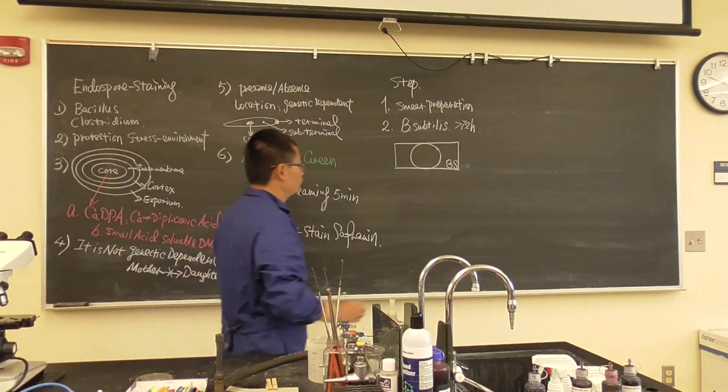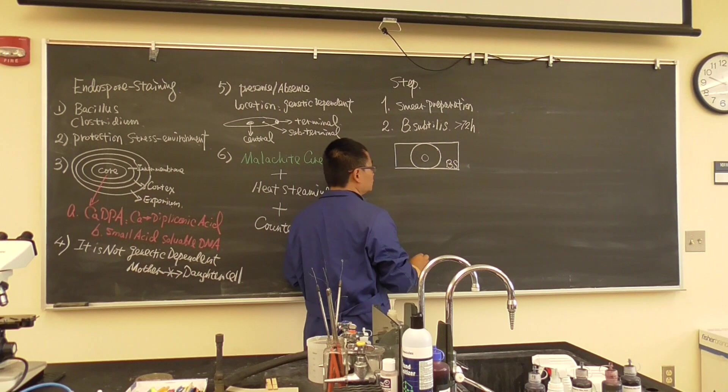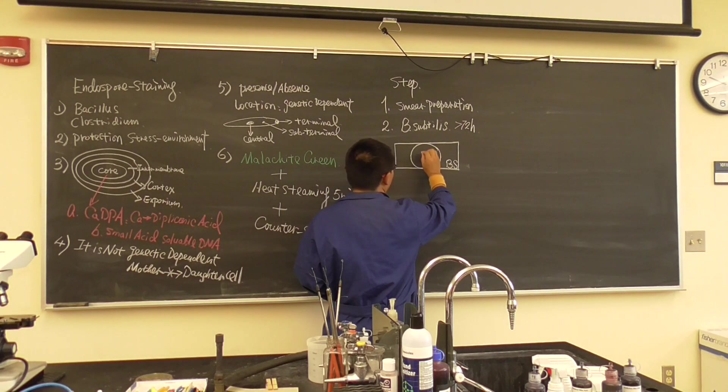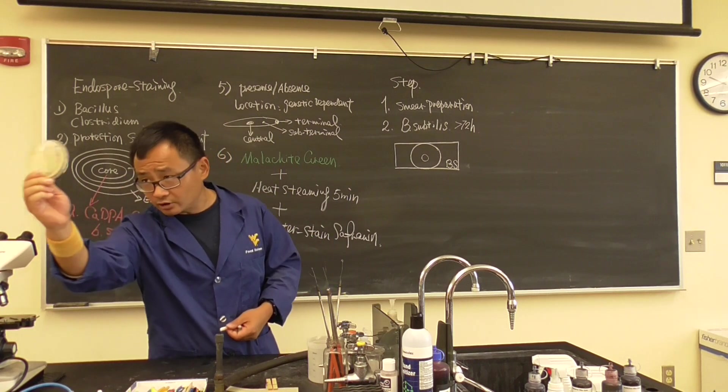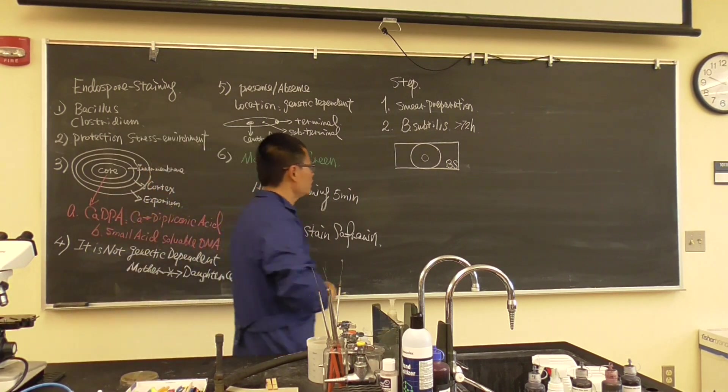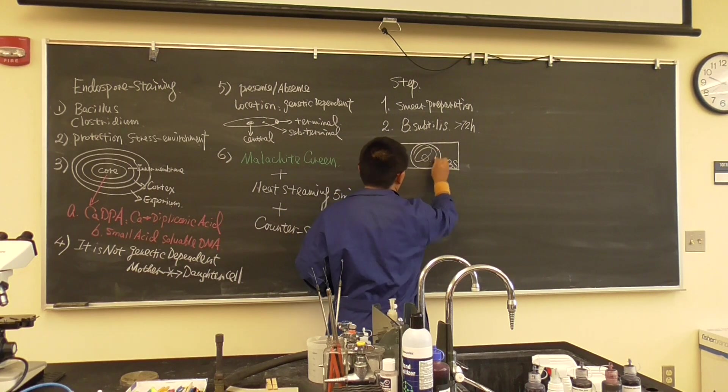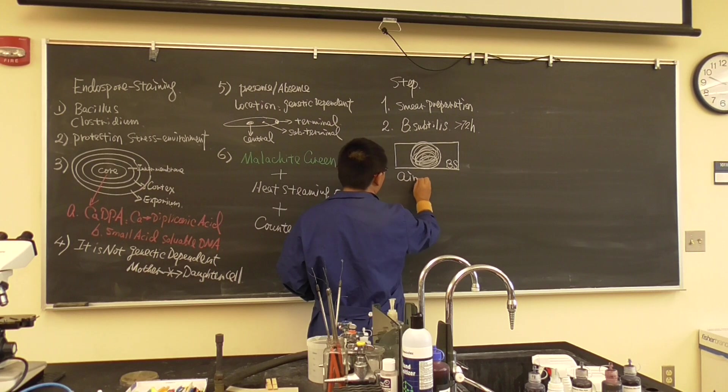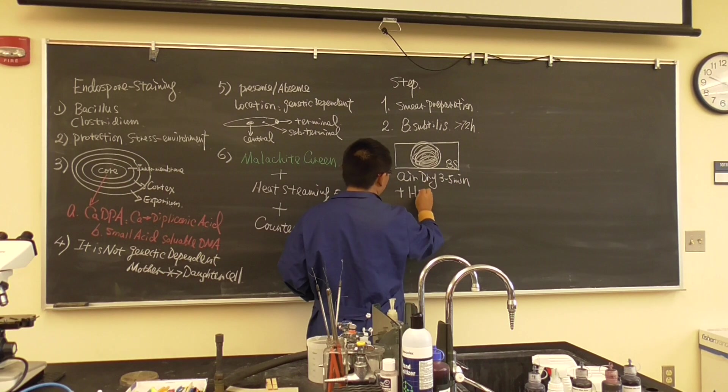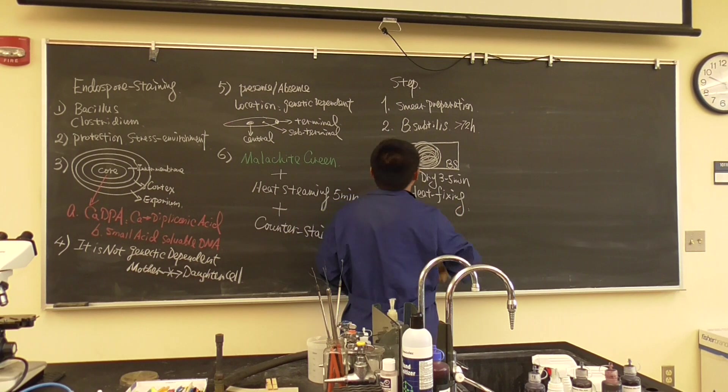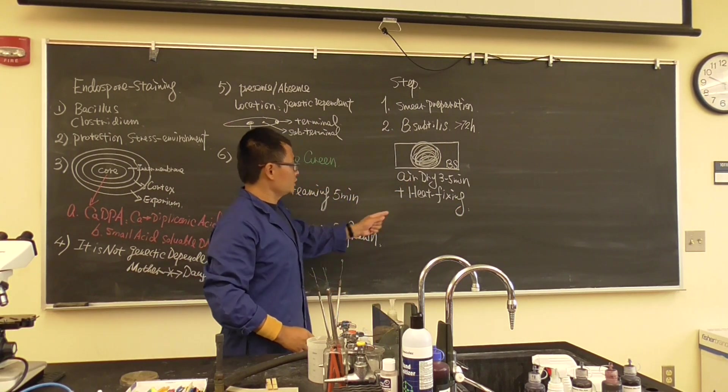What we're going to do is the same thing like you did before: we have a glass slide, draw a big circle in the center and then mark BS - Bacillus subtilis - on the side. Then what we do, same like you did before, add one drop of water, and then pick Bacillus subtilis from the plate. This is a plate, it's really good, it has the colonies there. Can you see it? Pick from there and then make a big smear. And don't forget we need to do air dry for three to five minutes, followed by heat fixing.